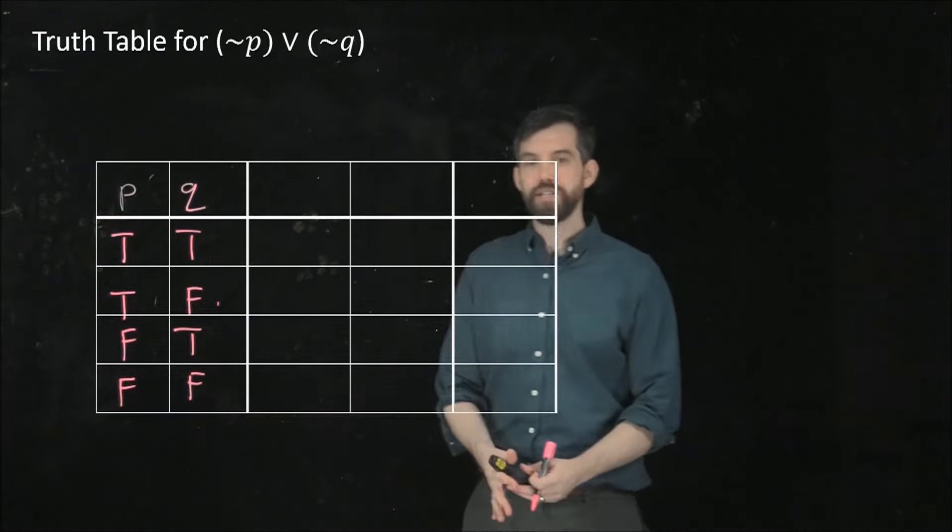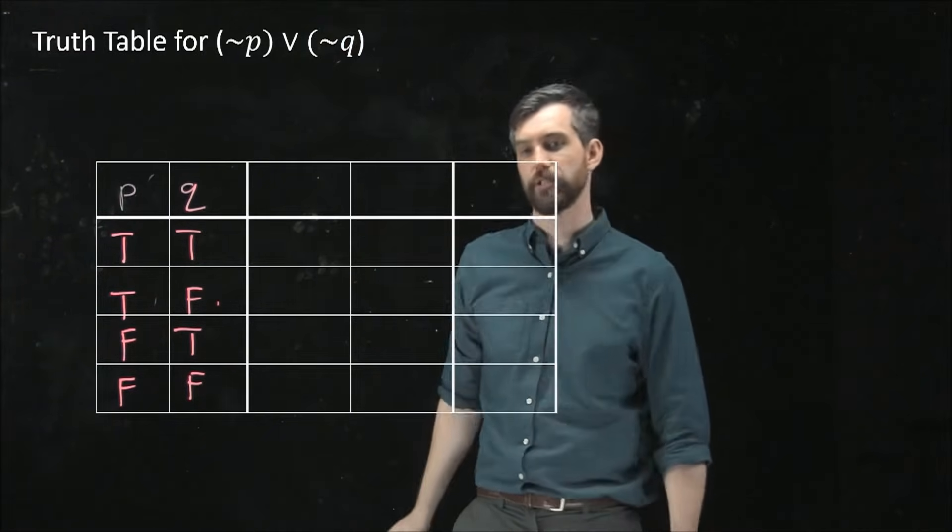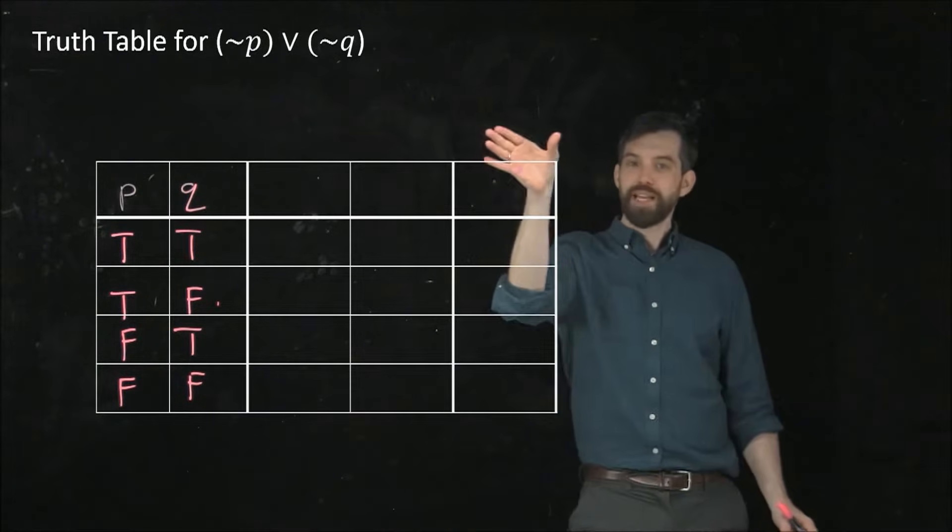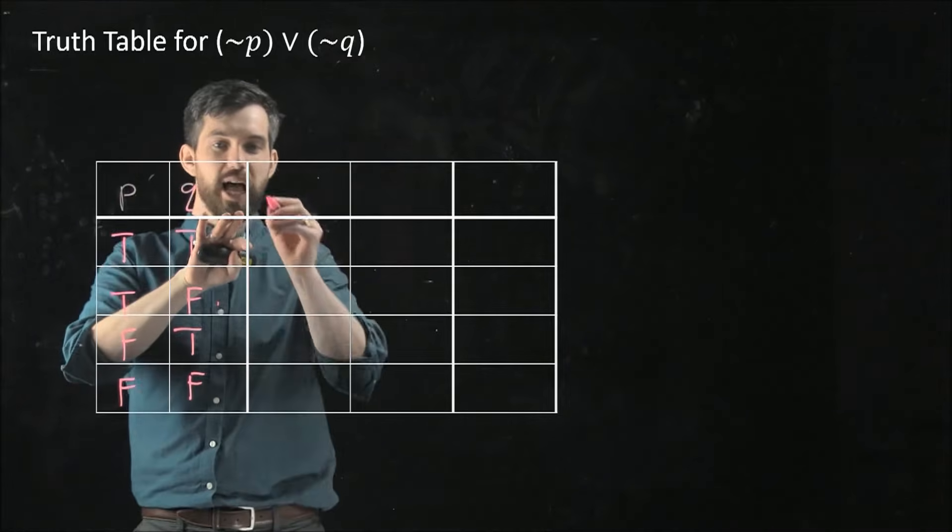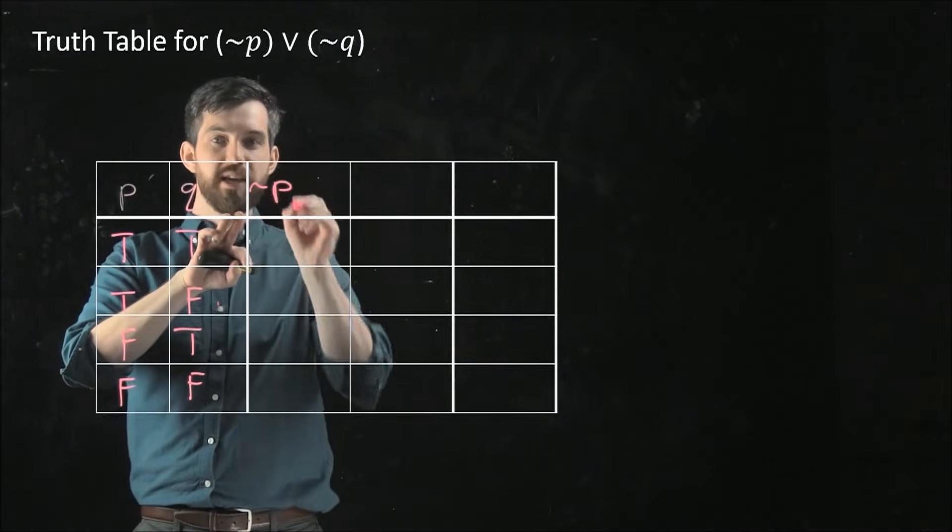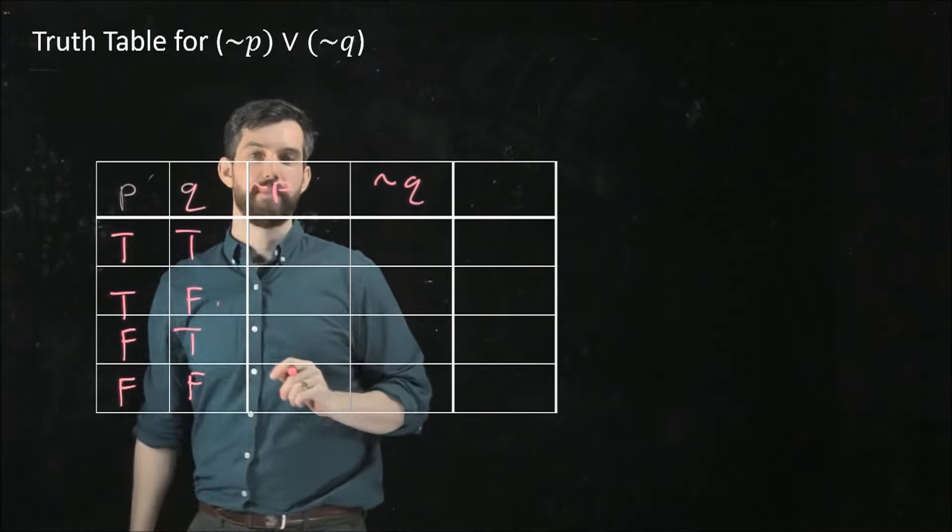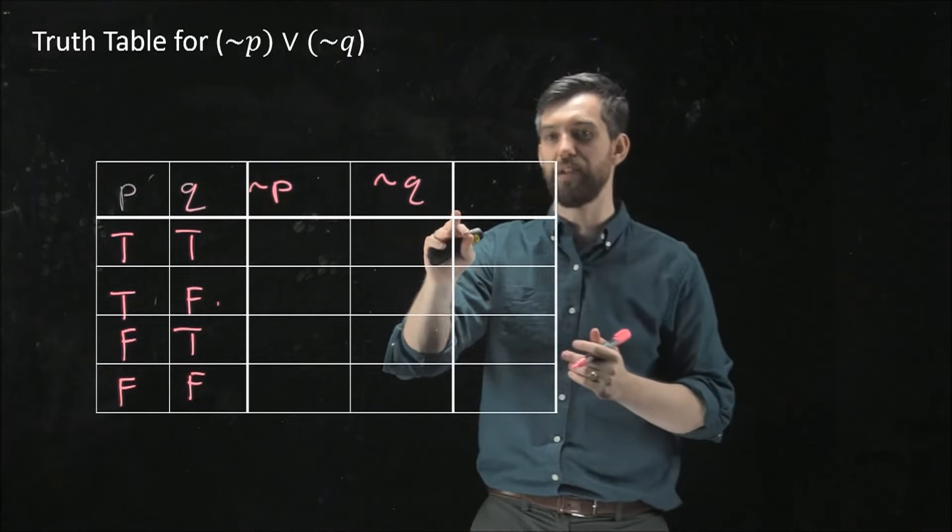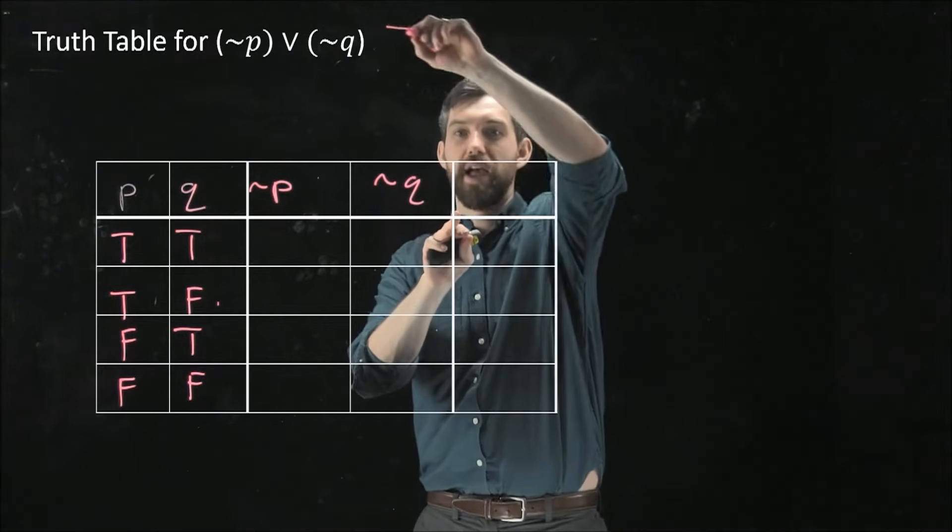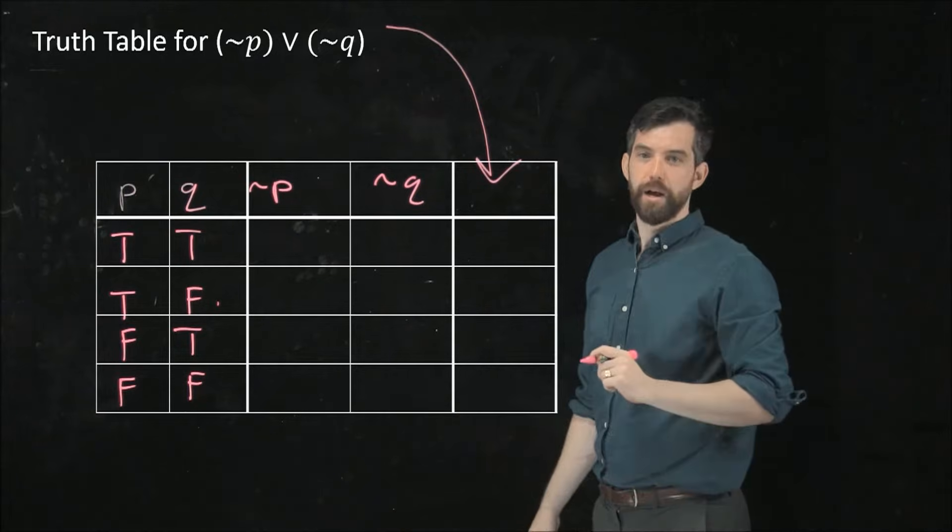Now, I don't want to jump right to the final column. I don't want to jump right to this final answer. I want to give you some intermediate ones that are going to help me along. So I'm going to put not P here and not Q over there. I'm going to figure out what those are, and then finally, after I'm done with everything, I can come down here and put this inside of there.